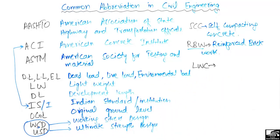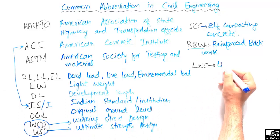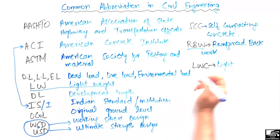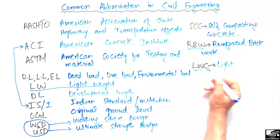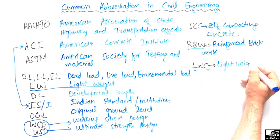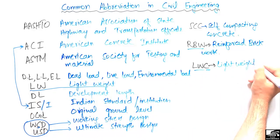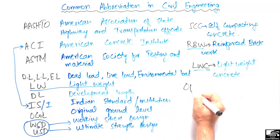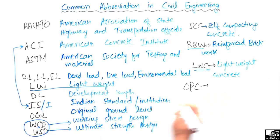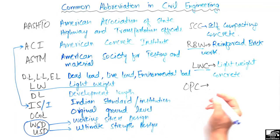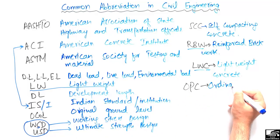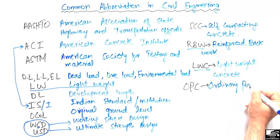The next abbreviation is LWC, which represents Lightweight Concrete. Note that LW alone represents lightweight, but LWC means lightweight concrete. We also have OPC, which stands for Ordinary Portland Cement.